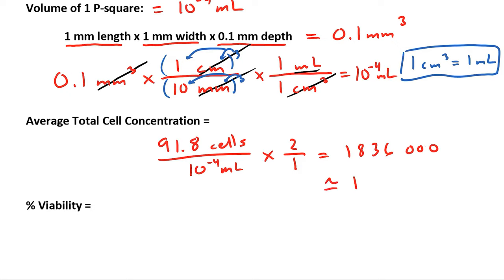Round that off to three significant digits. And we get 1.84 times 10 to the 6 cells per mil. This again is total cell concentration.